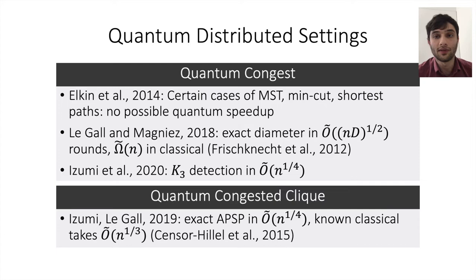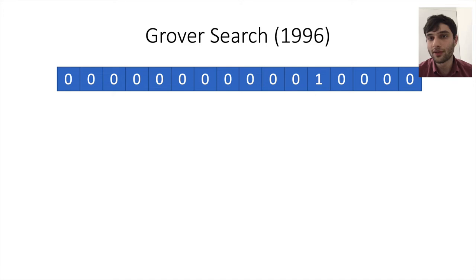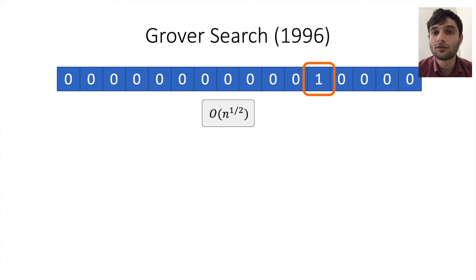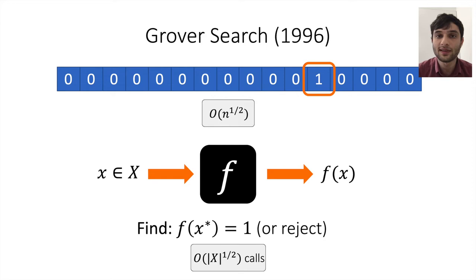As a warmup, let's see how we take algorithms for listing cliques of some size P and turn it, using just a single Grover search, into an algorithm for detecting cliques of size P plus 1. Grover search, on the most basic level, says: given a binary array where we know some entry has a bit which is on, find such an entry in O(√n) time where n is the length of the array. We have some black box function f and domain X; if there exists some x* where f(x*) = 1, we can find such an x* in square root of the domain size queries, or reject and say none exists.